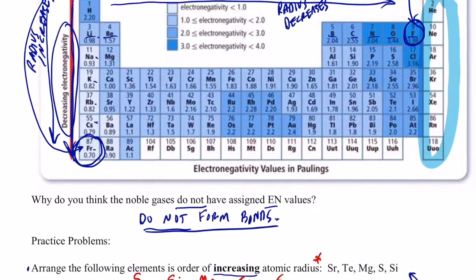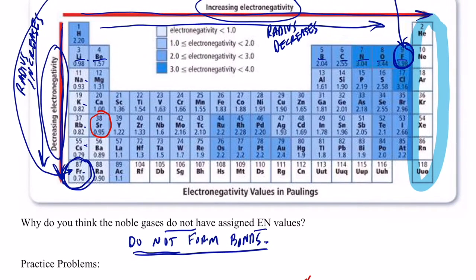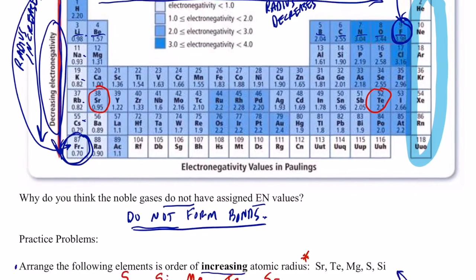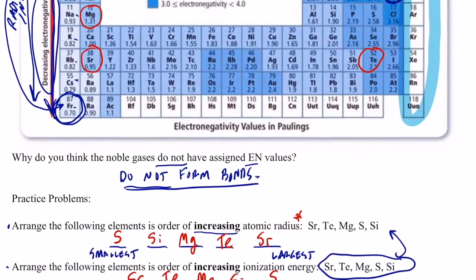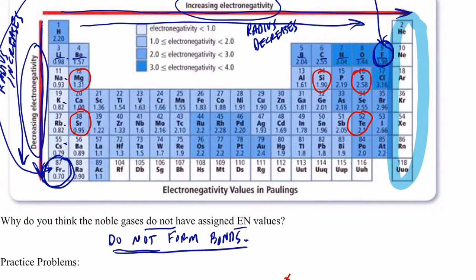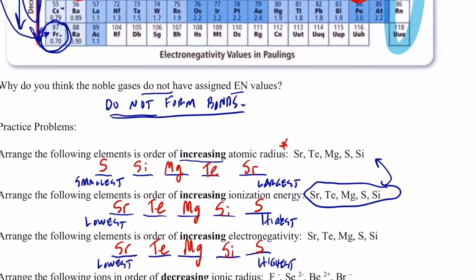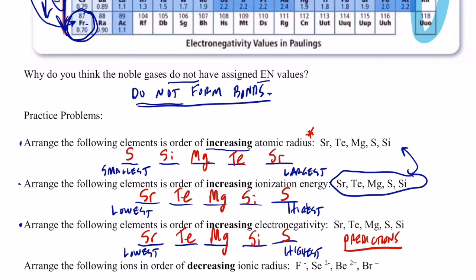We can check against the chart: strontium is 0.95, tellurium is 2.1, magnesium is 1.3, silicon is 1.9, and sulfur has the highest. Tellurium has a higher electronegativity than magnesium, which goes against our predicted trend a bit — but for our predictions, those are pretty good. Predictions are not always perfect.